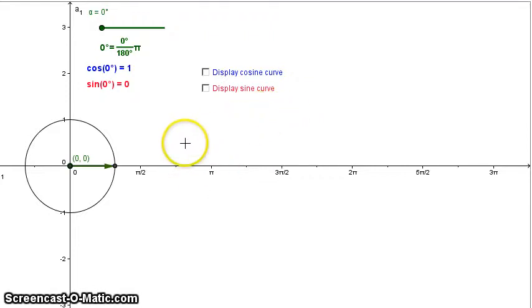So what this little interactive applet does is relate going around the unit circle like we've been doing to the wave of a sine and a cosine curve.